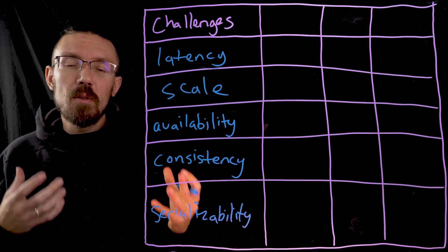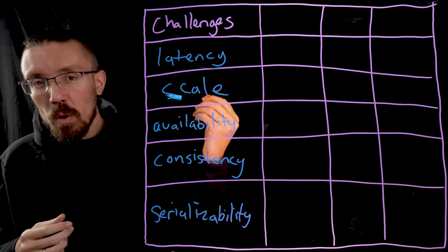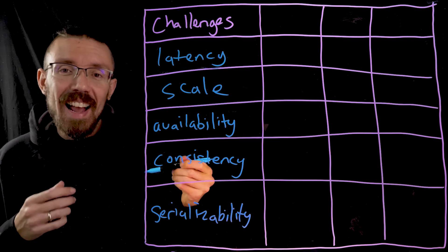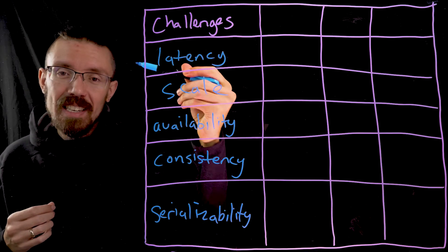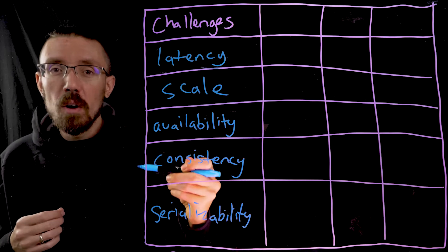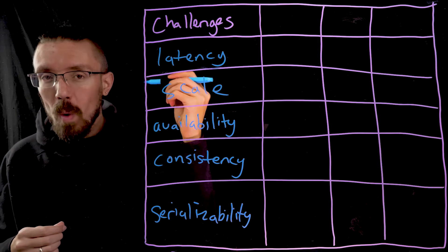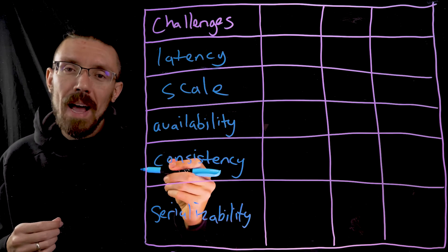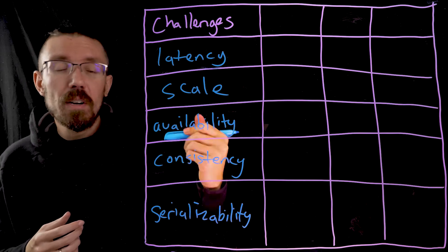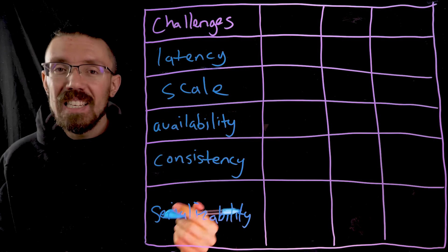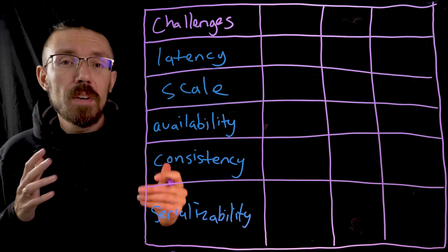That leads into the next challenge, which is related to consistency: serializability. In the context of a gambling app, you need at least some level of serializability in terms of your transactions, which means you need to know the order in which each transaction was processed and committed to the database. So you can know: this bet was placed at a time when the odds had already been set to a certain value, and then the event happened in the game, and therefore this user won at these odds and we can pay out this amount. You need to know when the odds changed, when the user placed the bet, and when the event happened — and there can be no doubts about that order.